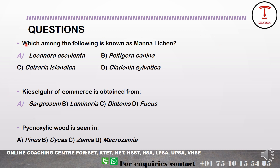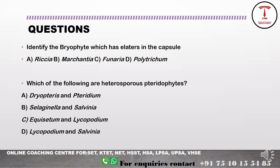Sample questions include: 'Which among the following is known as Manna Lichen?' — the answer is Lecanora esculenta, which is the manna lichen. This is a question on economic importance. Another question on algae economic importance: 'Kieselguhr of commerce is obtained from diatoms.' A question on pycnoxylic wood — gymnosperm — versus manoxylic wood. Another question: 'Identify the bryophyte which has elaters in the capsule' — the answer is Marchantia, as Marchantia capsule has elaters present.